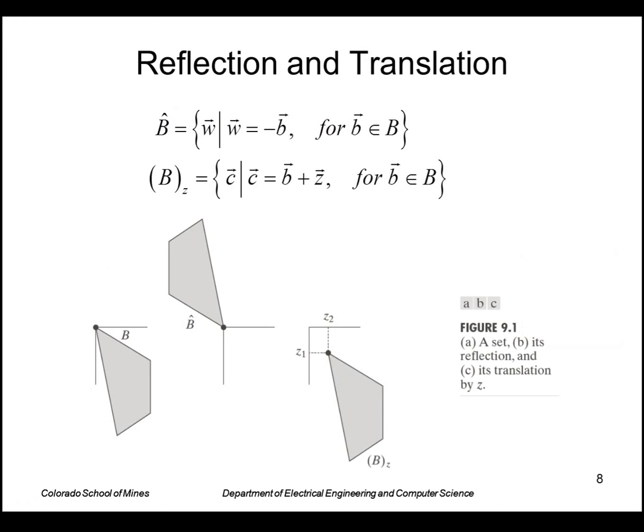A couple more concepts we'll need: reflection. Reflection of a set B, denoted by this up arrow, is elements W such that W equals minus B for some B as an element of the set B. So basically we are reflecting or negating these vectors, flipping it around the origin. So if this is our set B, here's the origin, the reflected set is up here. The translation is denoted like this with the subscript Z. This says that it's the element C such that C equals B plus Z. So basically we're taking every element of B and adding an offset, a translation Z to it.